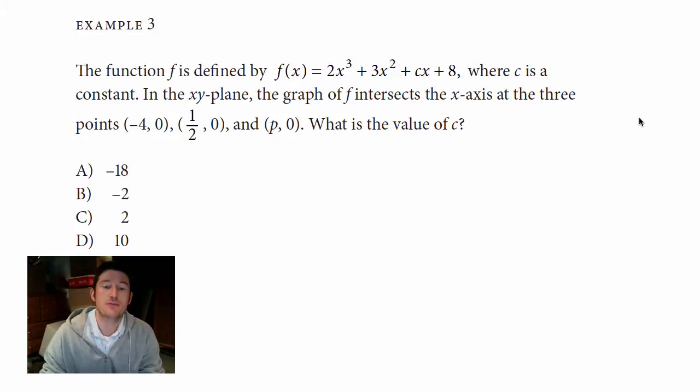It says the function f is defined by f(x) = 2x³ + 3x² + cx + 8, where c is a constant. In the xy-plane, the graph of f intersects the x-axis at the three points, and it gives three points right here. What is the value of c?